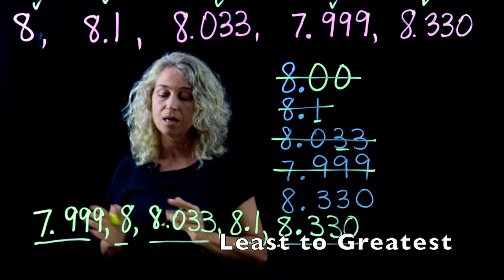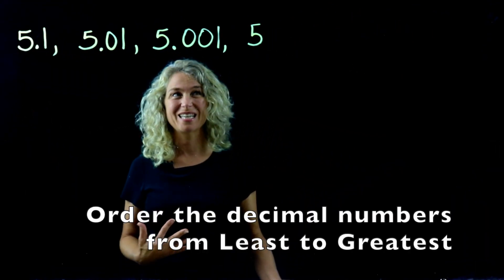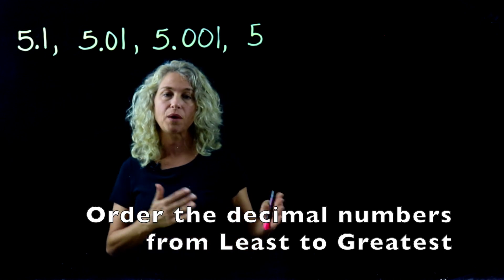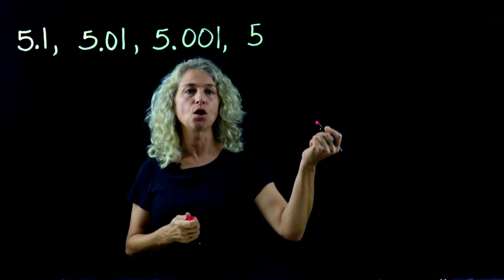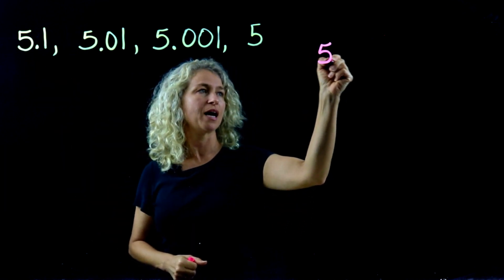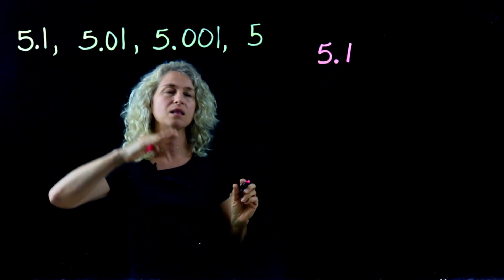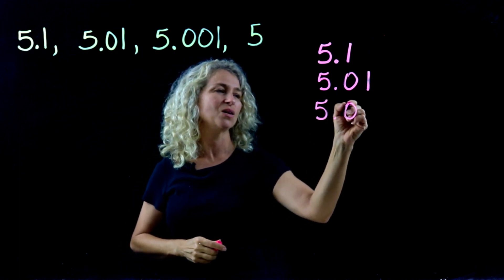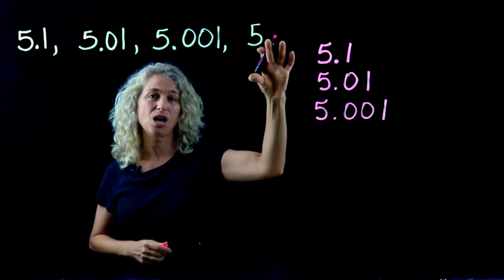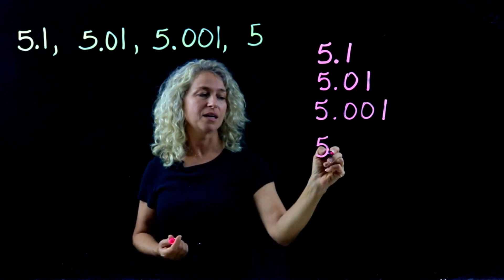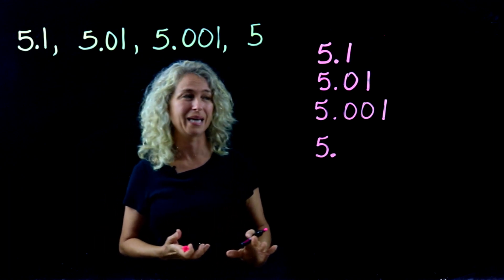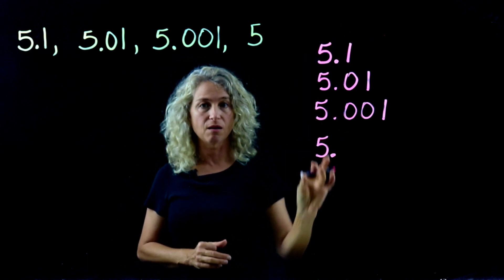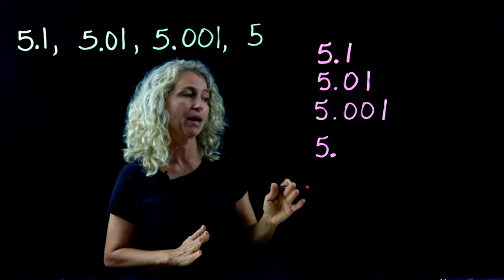In this example we have a lot of fives. We want to compare them and put them in least to greatest order. Let's rewrite them stacked: five and one tenth, five and one hundredth, five and one thousandth, and the whole number five — where the decimal would be to its right. All start with five, so we need to move to the next place value to compare.